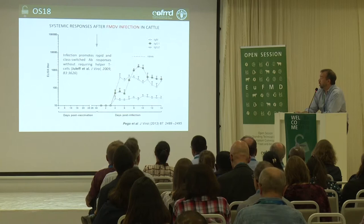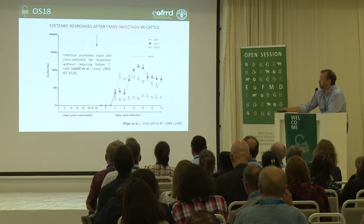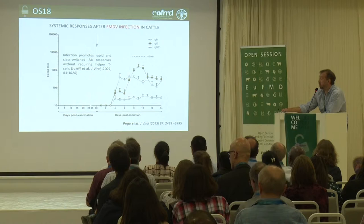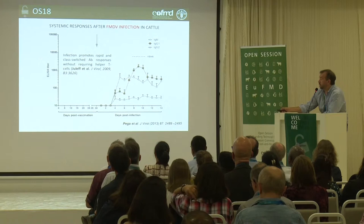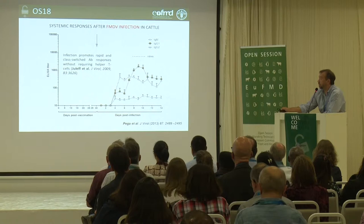Some time ago, we published this result where it describes the systemic response in cattle that have been infected through the aerogenous route. As you can see, there's a typical progression of different isotypes with IgM at first, and then a slow increase of IgG1.